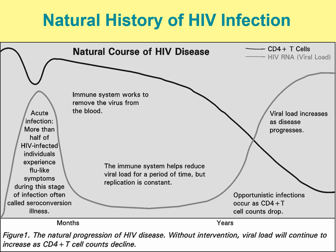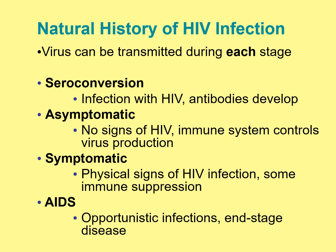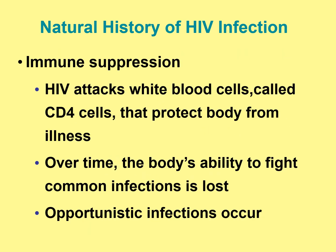Your immune system works to remove the virus from the blood and reduce viral load for a period of time, but replication is constant. Viral load will eventually increase as the disease progresses, and opportunistic infections will occur as your CD4-plus cells start to drop. The virus can be transmitted during each stage: at seroconversion, during the asymptomatic phase when there are no signs but you are still infectious, during the symptomatic phase with physical signs of HIV infection and some immunosuppression, and when you have full-blown AIDS with opportunistic infections and end-stage disease.